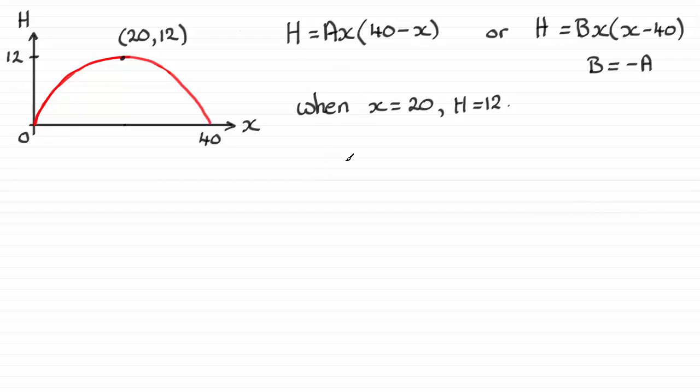And if you do that, let's say we substitute it in here then, we therefore have that 12 equals a times 20, I'll just write it as 20a, times 40 minus the 20, which is going to be 20. So we've got 400a on the right hand side here. So a must be equal to 12 divided by 400. And I would cancel top and bottom here by 4, and that would just give me 3 over 100.